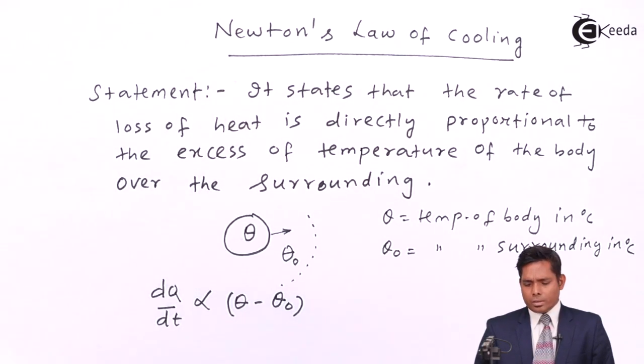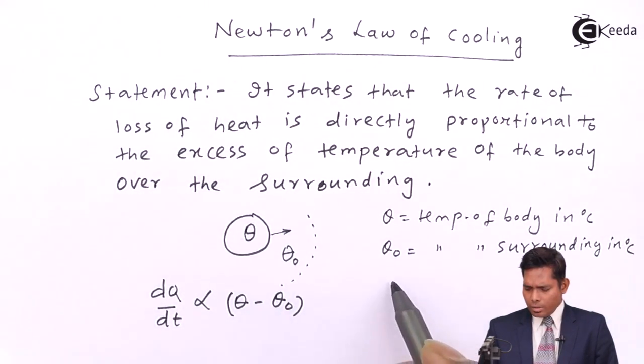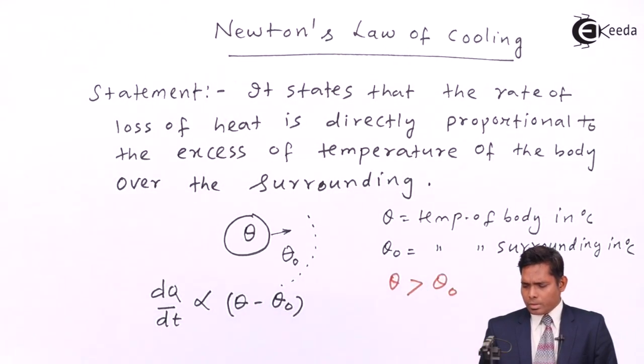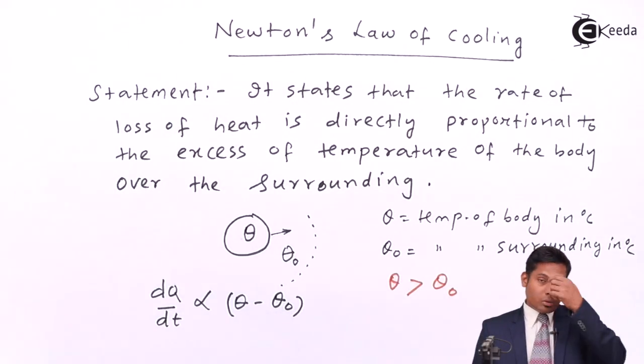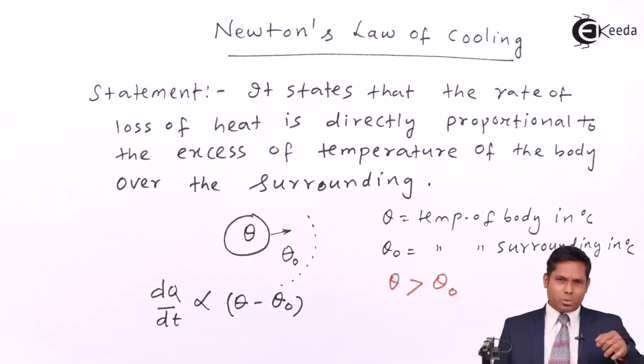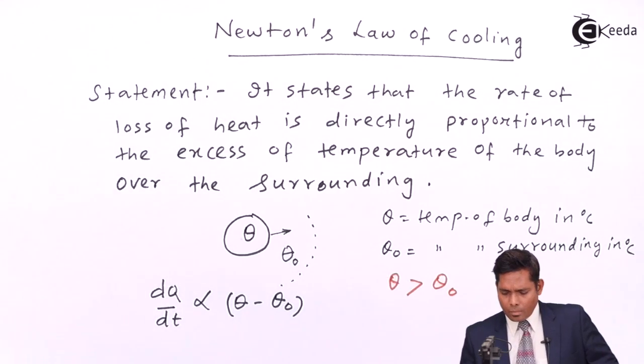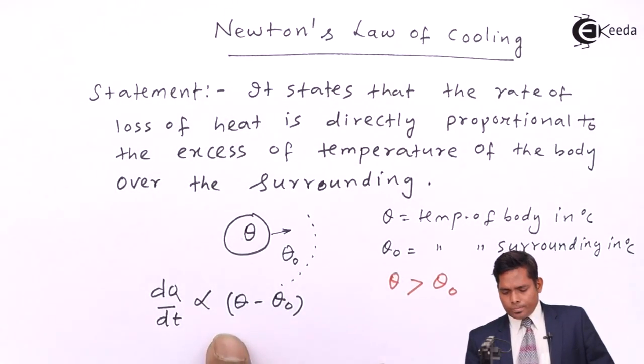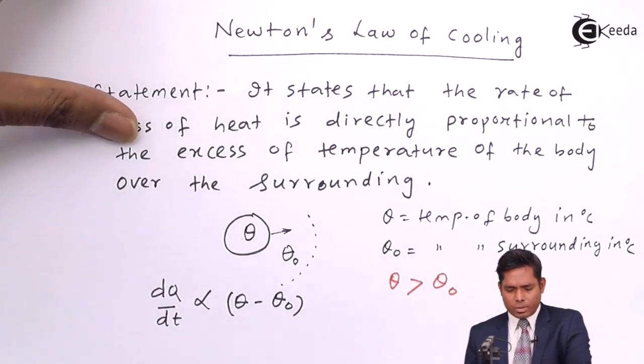But here there is a difference in temperature, and we say that this θ is greater than θ₀. So the body is supposed to cool and the environment is supposed to get heated. So if I remove the proportionality, I will get a constant, that is, a proportionality constant I have to introduce. So let us see what equation we are getting.